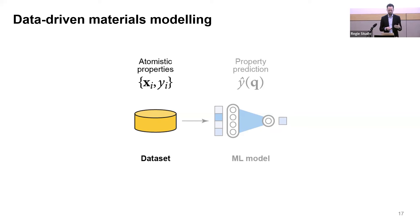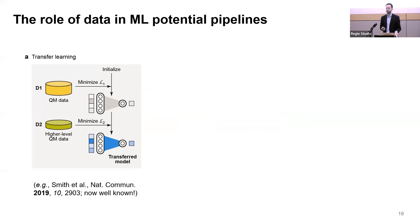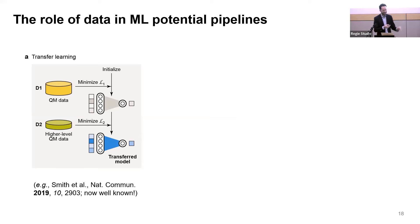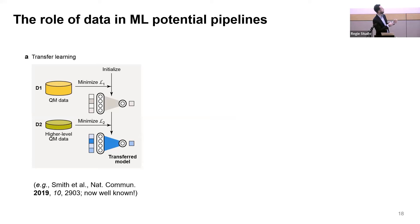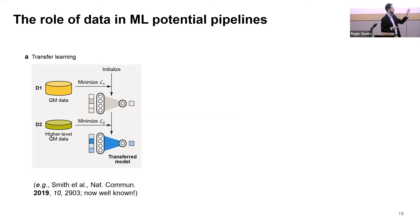We're not the first people to think about this. There's a paper from 2019 — one of whose authors, Oleksandr Isayev, was a visiting professor here not long ago — showing that if you want to machine-learn very high-level quantum chemical data that are expensive to come by, you can take a machine learning model, train it on cheaper density functional theory data, and then specialize it on higher-level data. You have fewer of these data points but they're higher quality. This is called transfer learning — you start with one model and transfer the information over. This paper has hundreds of citations and there are lots of other groups looking at transfer learning.